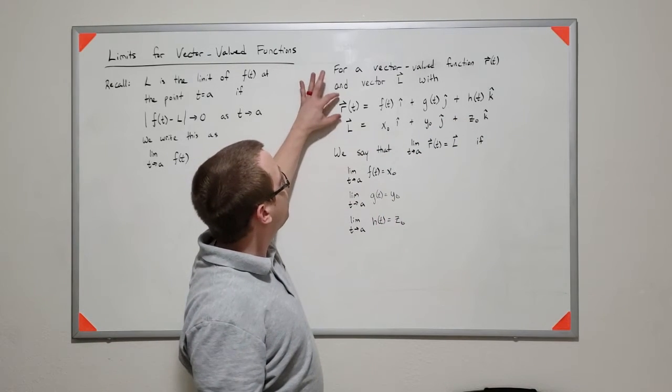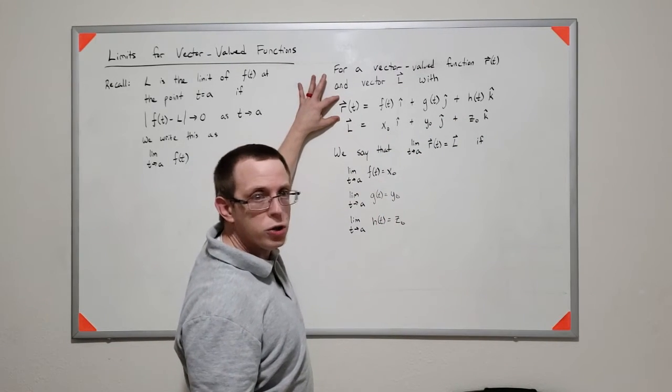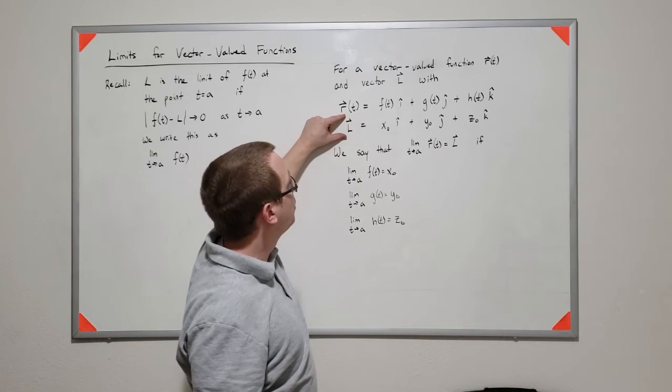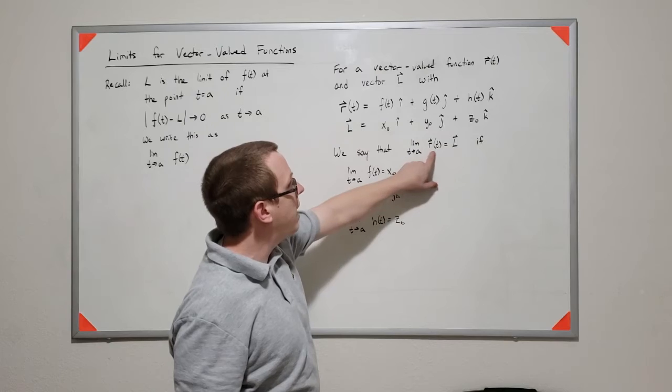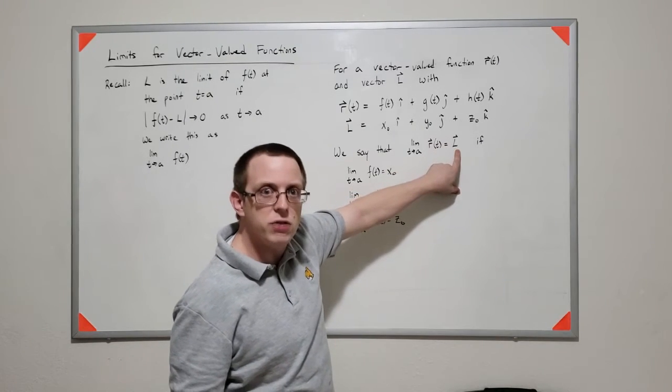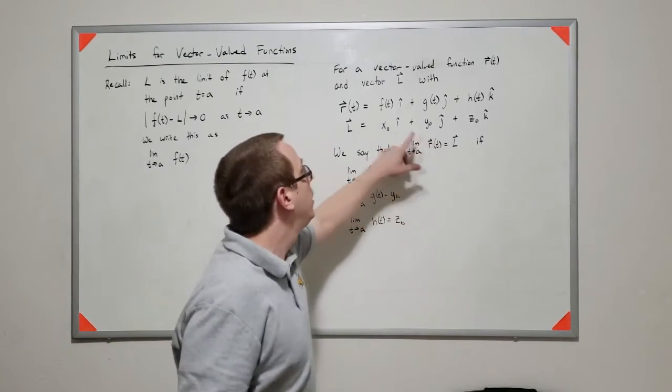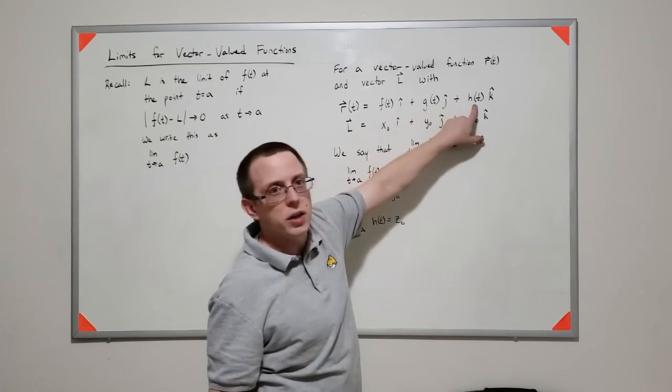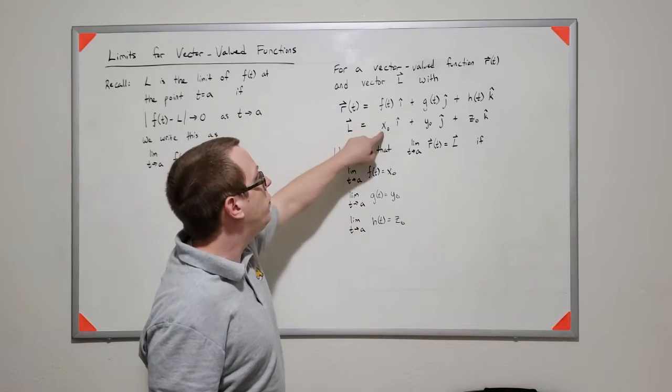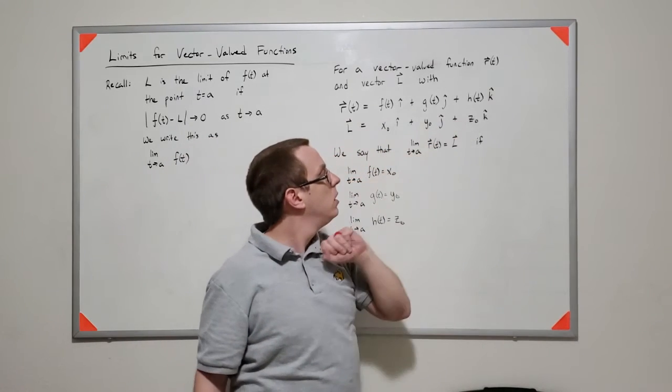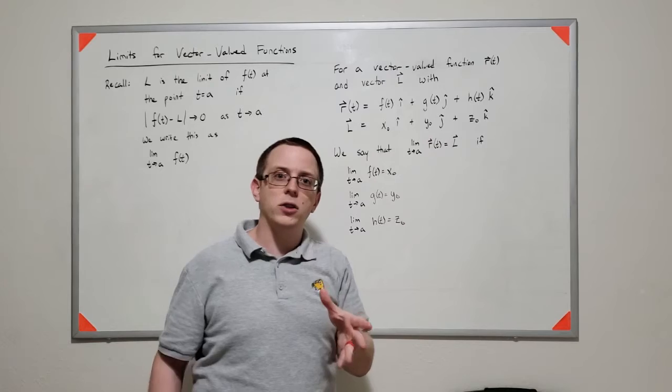So if I have some vector-valued function and some vector out in space, we can say that that vector function approaches this vector in space if the individual components of the vector-valued function approach the individual components of that final vector.